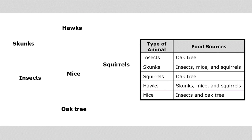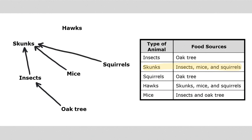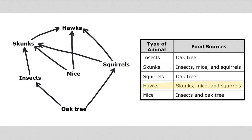Let's use this table to fill out our food web. Insects consume oak trees, so the arrow points from the oak tree to the insects. Skunks consume insects, mice, and squirrels — notice the arrows point toward the skunks. Squirrels consume the oak tree. Hawks consume skunks, mice, and squirrels. Mice consume insects and the oak tree. We were able to add all of our arrows by simply looking at the table of food sources.